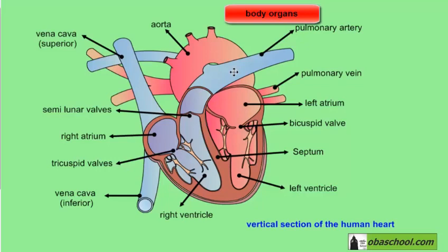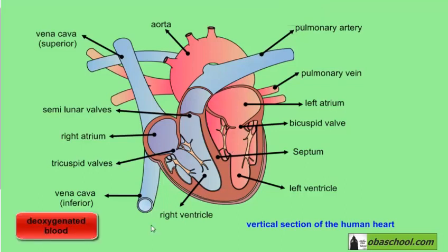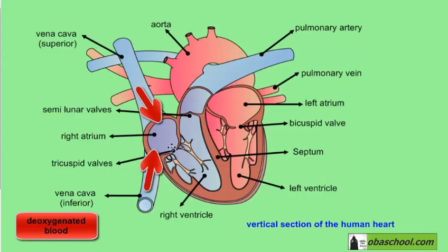By diffusion, oxygen will go from the blood to the organs, and carbon dioxide will go from the organs to the blood — so the blood is now deoxygenated. It will return to the heart through the vena cava — both the superior and the inferior vena cava — taking this deoxygenated blood to the right atrium of the heart.